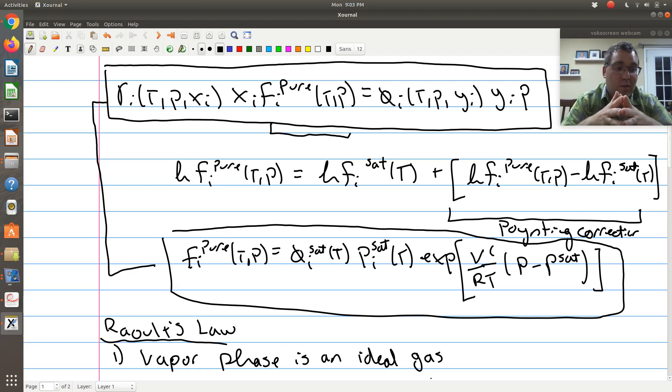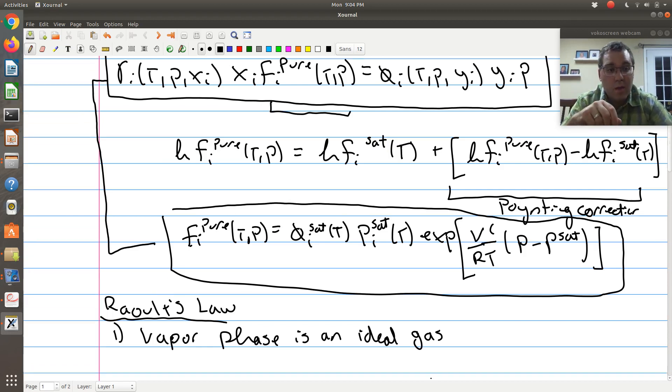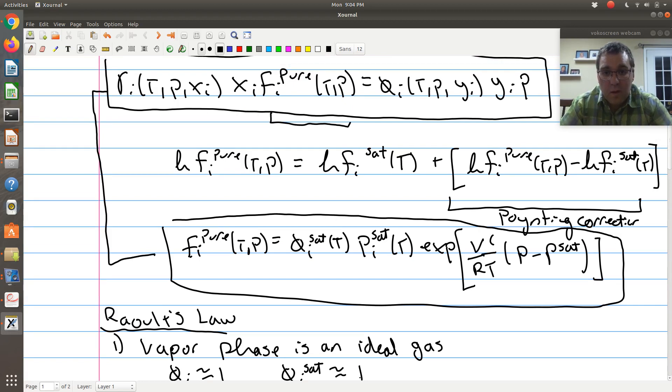If you were modeling acetic acid and you assumed the vapor phase was an ideal gas, and you made some predictions and realized your predictions weren't in good agreement with experimental data, that's where you can go back and check some of these assumptions and fix them where appropriate. ChemCAD can help you out with things like this, suggesting something like the Hayden-O'Connell model to account for vapor phase non-ideality. For Raoult's Law, first assumption is vapor phase is an ideal gas, which allows us to assume that phi is approximately equal to 1, and phi-sat is approximately equal to 1.